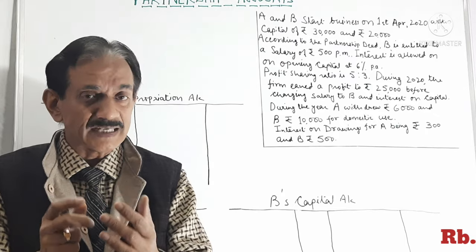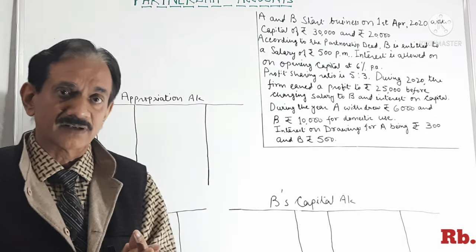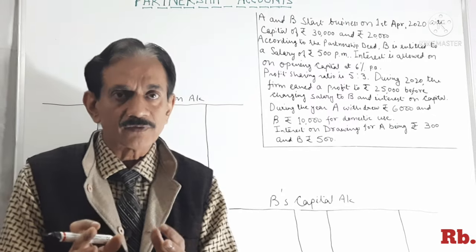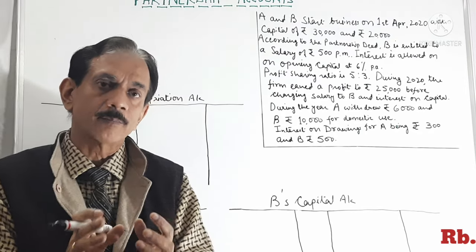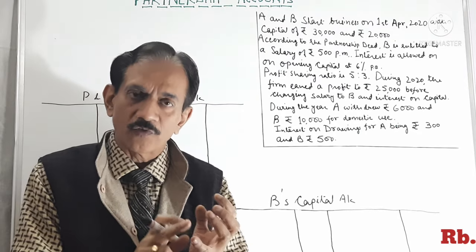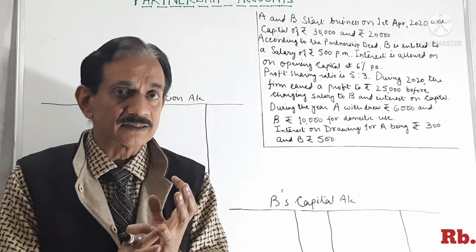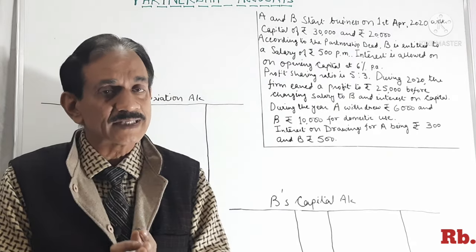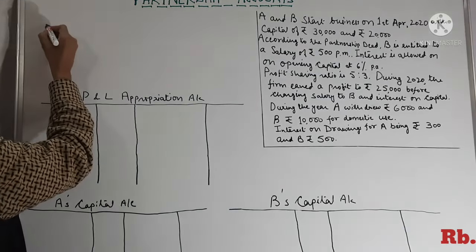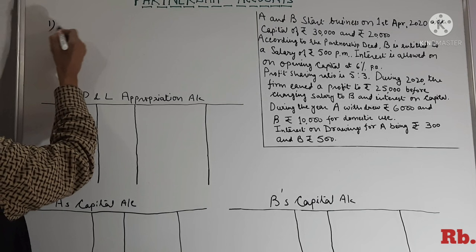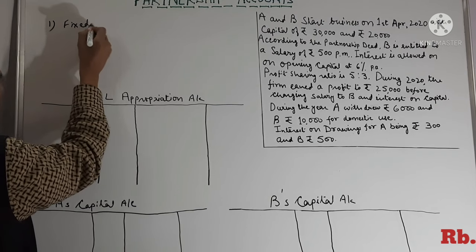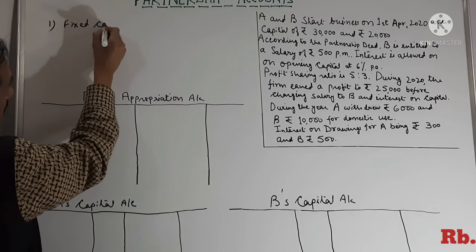Capital accounts ke baare mein aaj hum discuss karne waale hain. In a partnership firm, capital accounts may be maintained by two methods: one is the Fixed Capital Account Method, and another is the Fluctuating Capital Account Method.